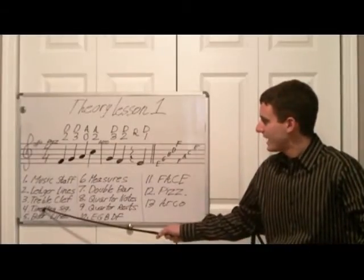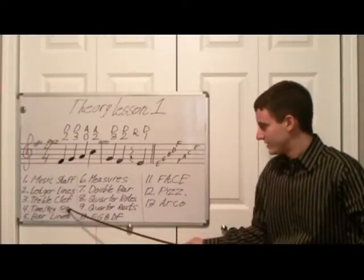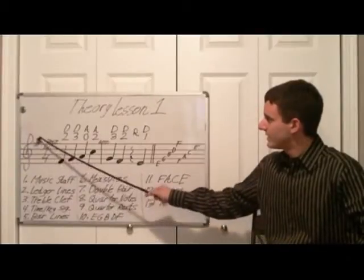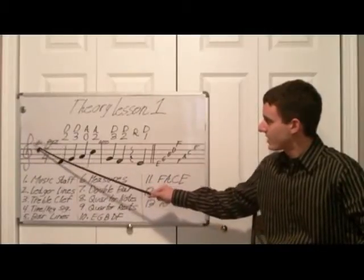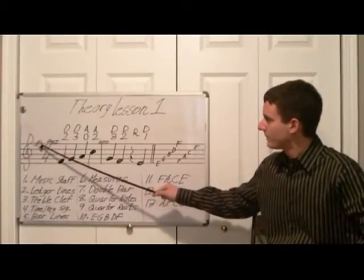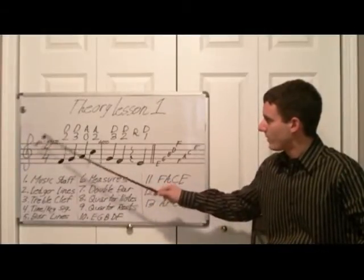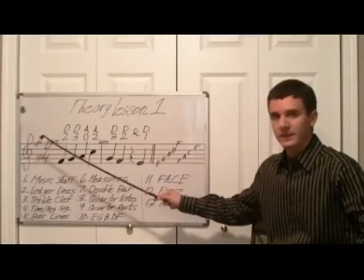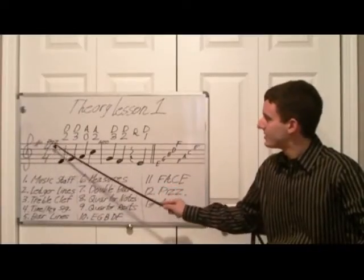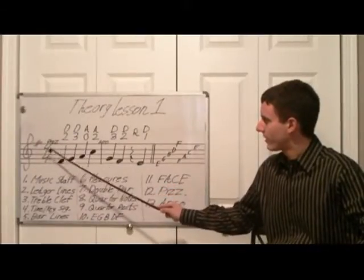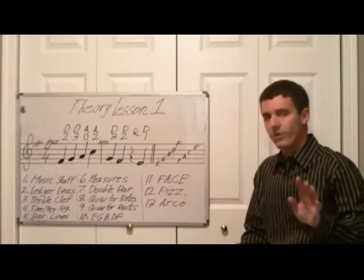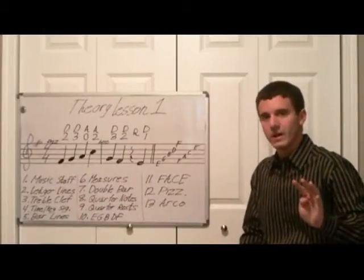The next thing we learned is time and key signature. Key signature is this little sharp sign right here, and we'll learn more about what that means later on. Time signature is the numbers here — four and four — and what that's saying is it's going to be four beats per measure.